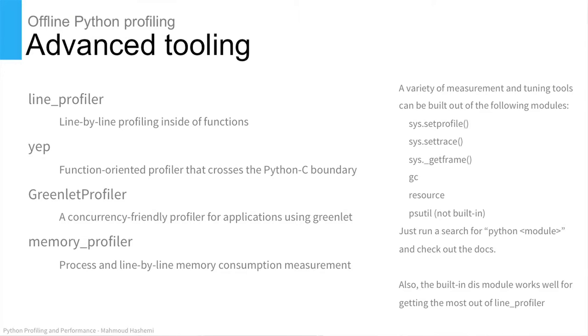There are a lot of advanced places you can go beyond cProfile. cProfile gives you per-function stats. There's also line_profiler, which goes line by line for a particular function and tells you which line is taking a long time — it's basically timeit on every single line. Then you have yep, which crosses the Python-C boundary, so if you're wondering what's taking so long in extension modules and other areas, use yep. Concurrency can really mess with your profiling — if you use Greenlet like we do at PayPal, there's Greenlet Profiler, and other profilers for other types of concurrency. There's also memory profiling if you care about how big your processes are getting. Importantly, all these tools are built with things that are built into Python — it's a very rich runtime with nice big enterprise bones.